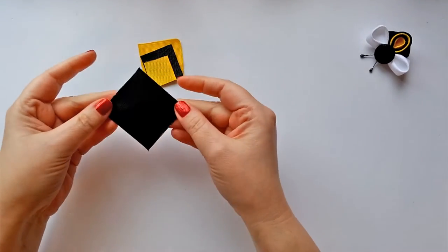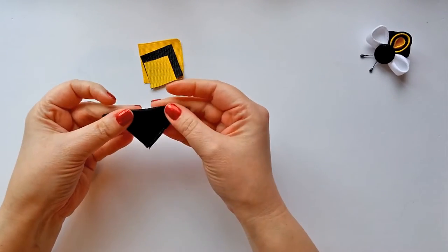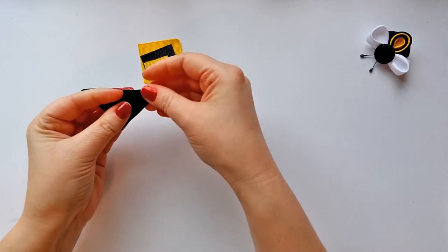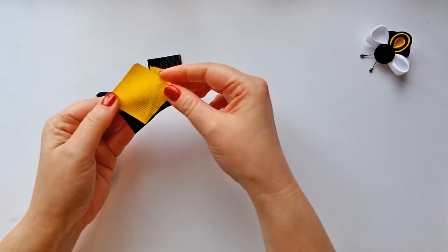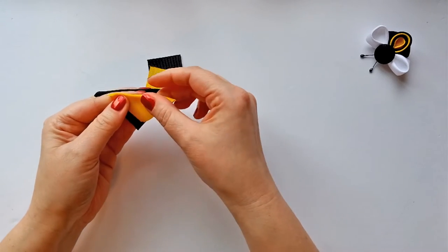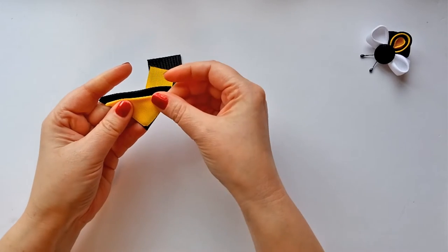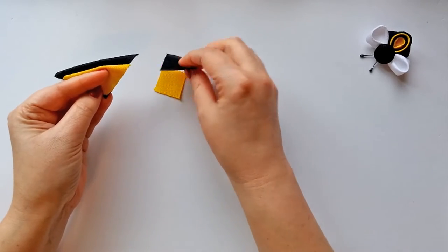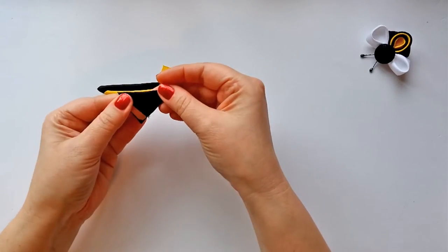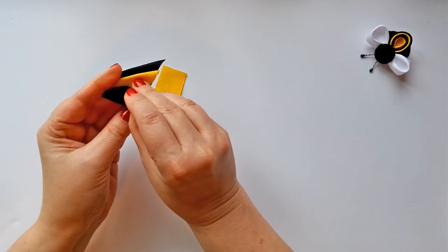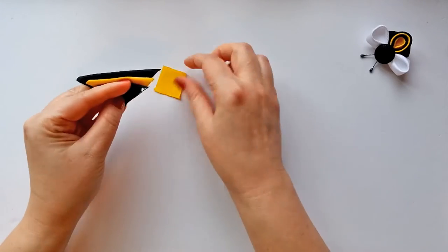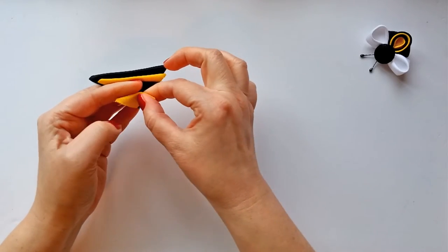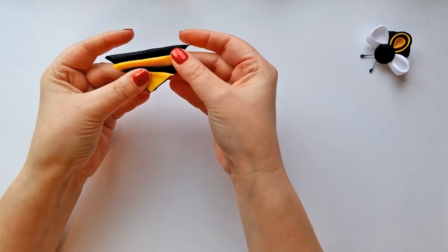Take your 2 inch or 5 centimeter black square and fold the top point down to the bottom point to form a triangle. Then take your 1.5 inch or 4 centimeter yellow square and repeat that, just fold the top point down and then line the bottom edges up with the black triangle. Then do that again with the 1.25 inch or 3 centimeters black square, and then again with the 1 inch or 2.5 centimeters yellow square. Make sure all of those bottom points and edges are lined up together nicely.